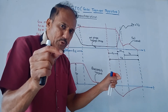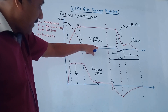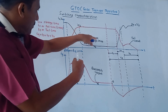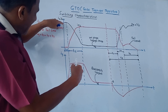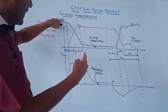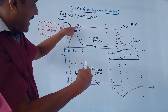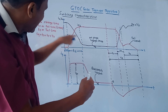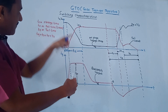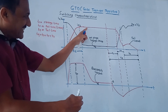At point A, the turn off process starts, because to turn off the GTO we need to apply a negative gate pulse. From point A, the negative gate pulse begins. On the combined graph, the anode current Ia is shown in red and anode voltage Va is shown in black. During turn on, when the gate pulse is applied, Va starts decreasing and Ia starts increasing.